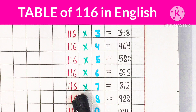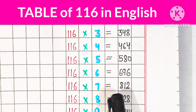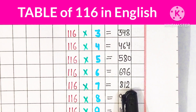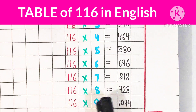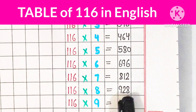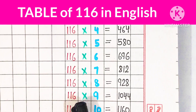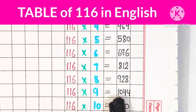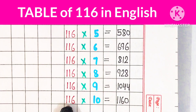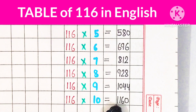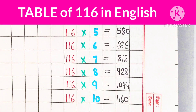116 7 are 812, 116 8 are 928, 116 9 are 1044, 116 10 are 1160.